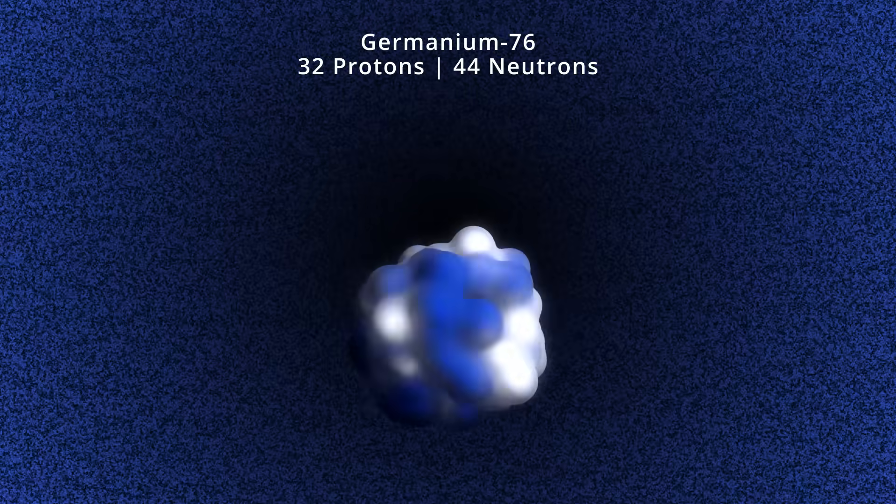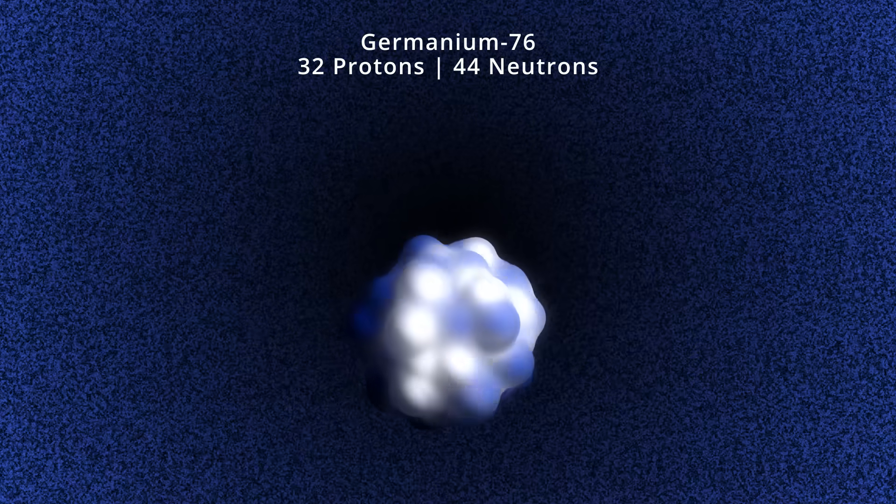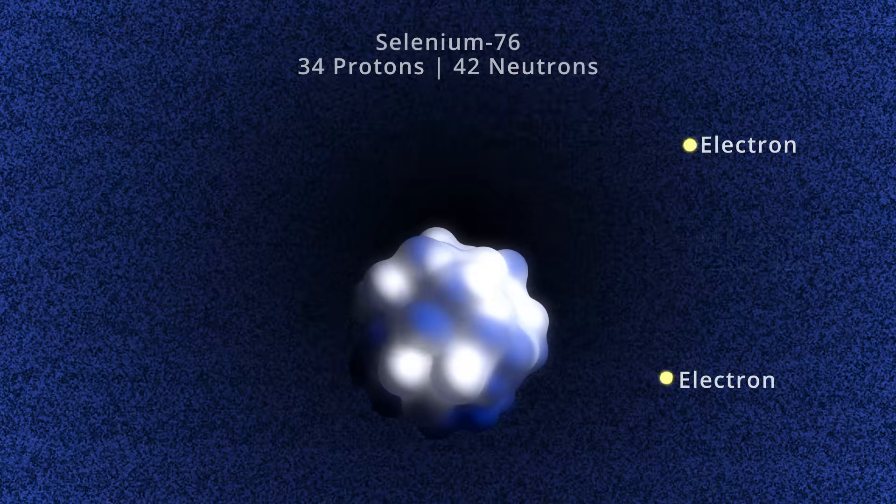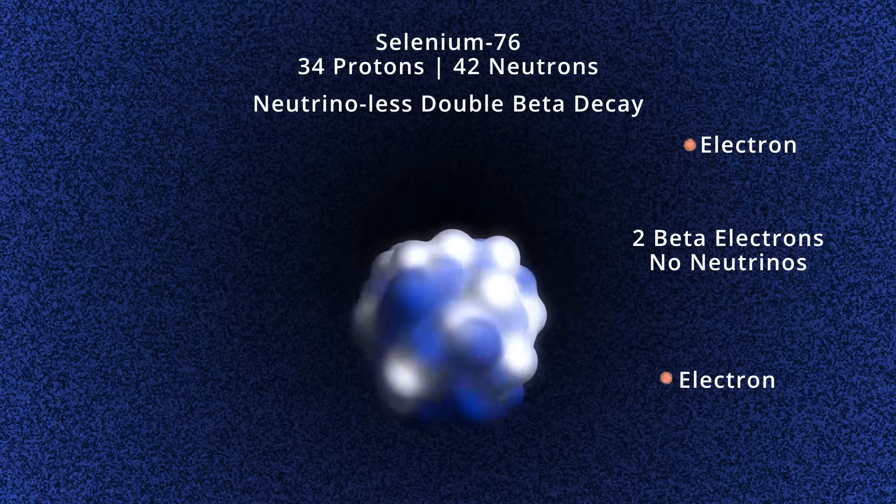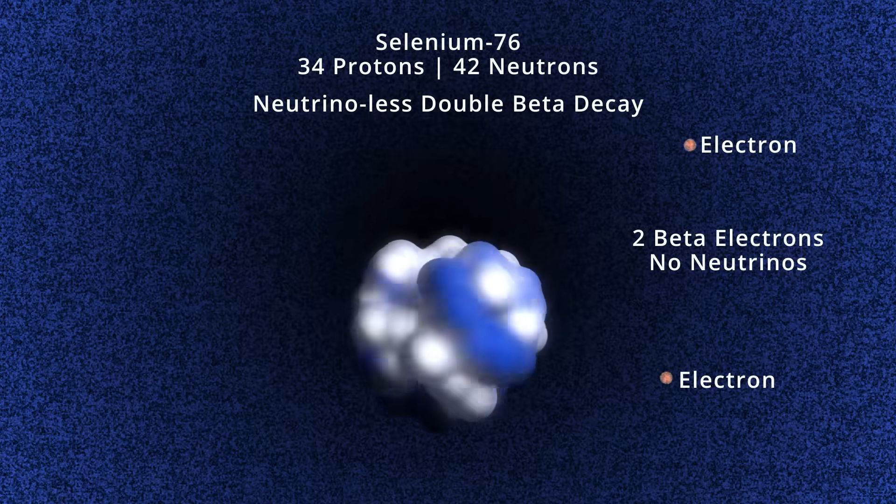If neutrino-less double beta decay can create electrons without antiparticles, it points to a mechanism that creates matter but not antimatter. This could lead to a deeper understanding of how our universe exists in the first place.